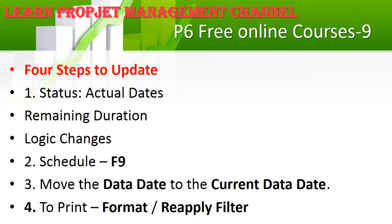After updating, press F9 for the schedule calculation — the program will calculate the earliest dates, remaining dates, and all your units. Then move the data date: if you're recording progress through February, add all your information, do F9, change the data date, and the program will give you all the update information. You can also print reports — I'll show in one or two lectures how to create reports tailored to different audiences: executives get a summary, project managers get detail, and clients get their own format.